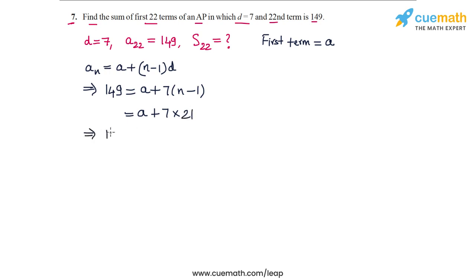So we get 149 is equal to A plus 7 into 21. That's 147. And this means that A is equal to 149 minus 147 or 2. So the first term of the AP is equal to 2.